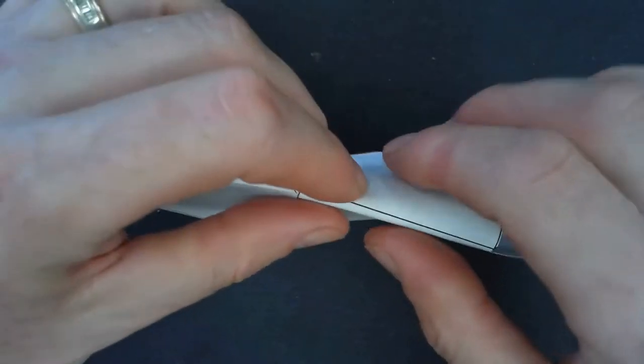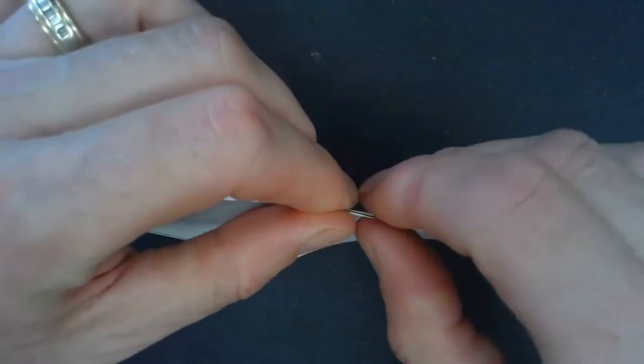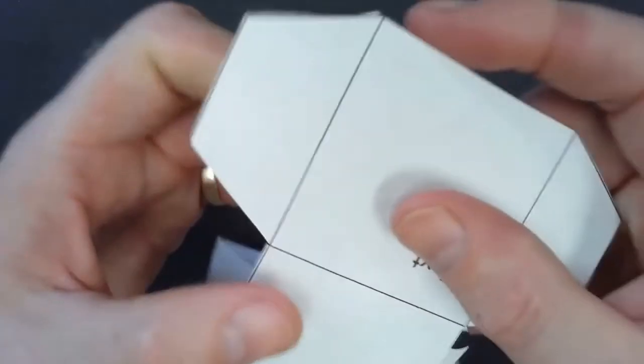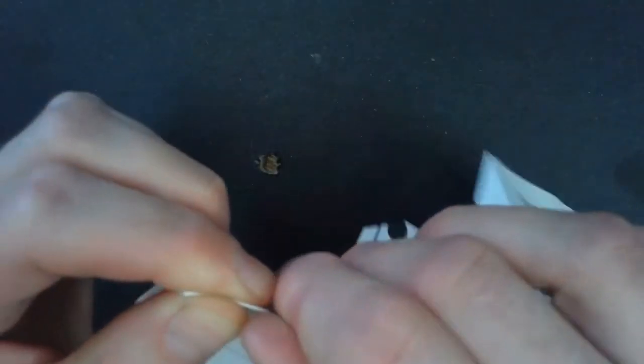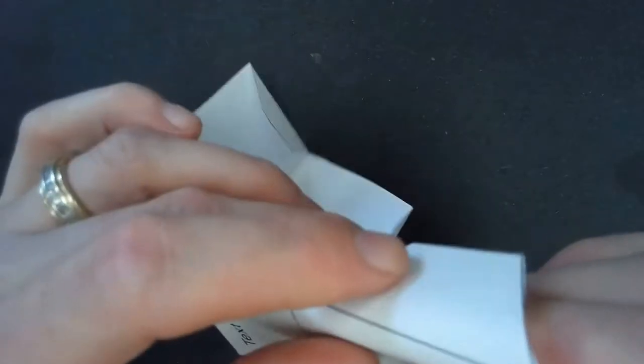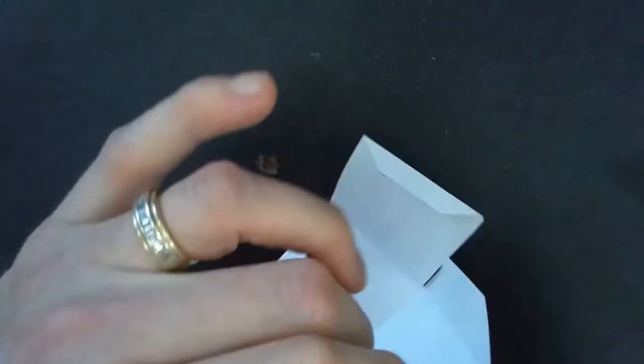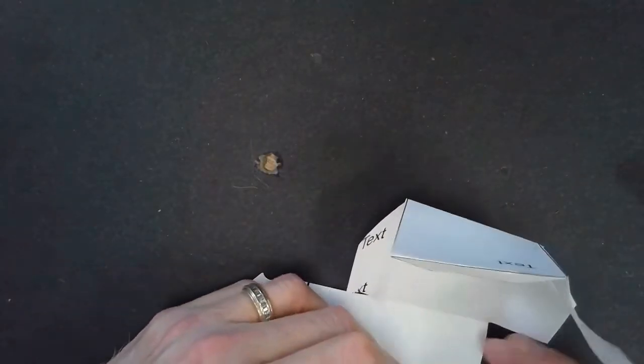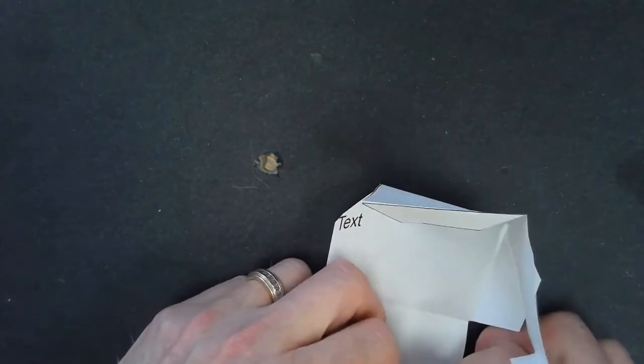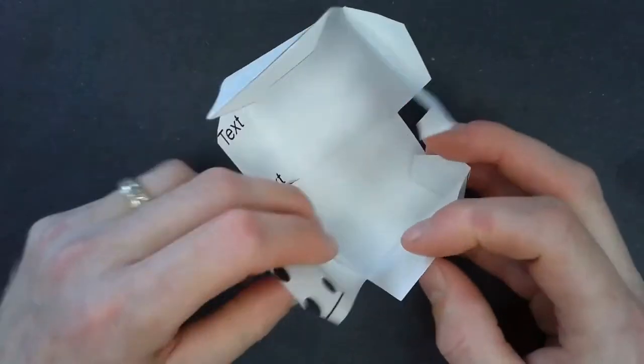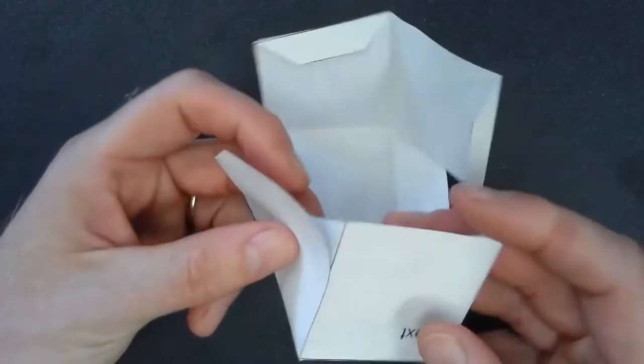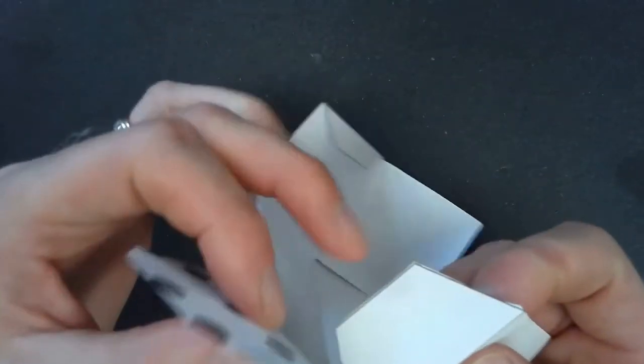Once you have everything folded, then you have to figure out how it all goes together. So typically all the flaps go on the inside, and they will fit together in some way. So I'm trying to make a cube with this template. If I fold this, I know that this is going to go here so that these two parts match up.